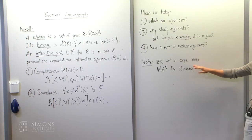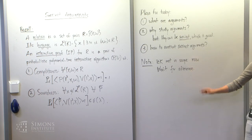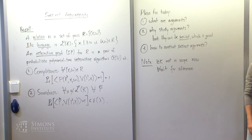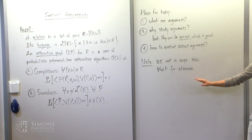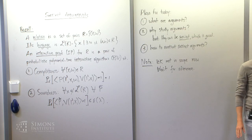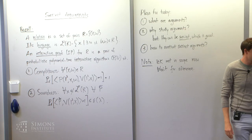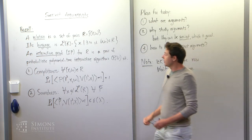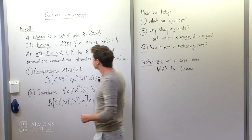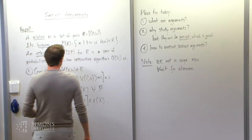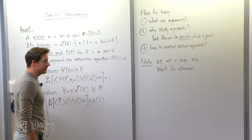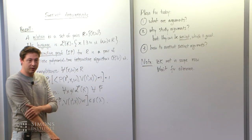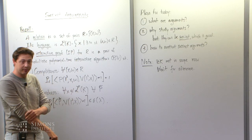Even though zero-knowledge and succinctness are great together, we'll really not discuss zero-knowledge this morning — this will be mostly left for the afternoon. To explain what is an argument, I have to first recall what is a proof. So here's a review from yesterday morning.